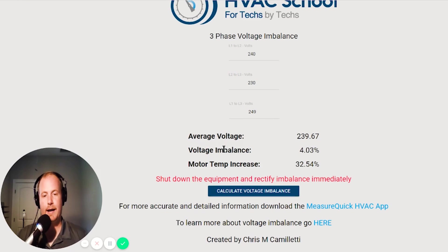Now we've got over four percent because now we're between 249 and 240. Our average voltage is 239.67 and now our motor temperature increase is a whopping 32.54%. So that shows you why it's so important to keep your voltage properly in balance.